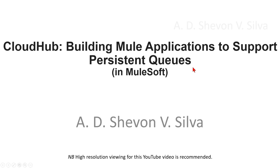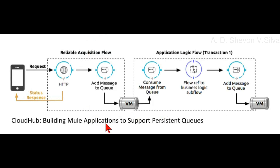CloudHub: building Mule applications to support persistent queues. Here we are considering building Mule applications to support persistent queues in CloudHub. For your application to benefit from the persistent queuing, implement the reliability patterns in your application code, separating individual XA transactions.